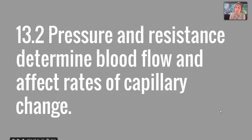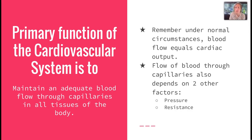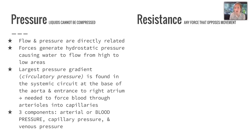Section 13.2 talks about pressure and resistance, which determines blood flow and affects the rate of capillary exchange. The primary function of the cardiovascular system is to maintain adequate blood flow through capillaries and all tissues of the body. Under normal circumstances, blood flow equals cardiac output. Blood flow through the capillaries depends on pressure and resistance. Pressure occurs because liquids cannot be compressed — they create a gradient, a high-to-low blood flow. Flow and pressure are directly related, so if you increase flow, you increase pressure and vice versa. Forces generate hydrostatic pressure, causing flow from high to low areas. The largest pressure gradient, or circulatory pressure, is found in the systemic circuit at the base of the aorta and entrance to the right atrium.